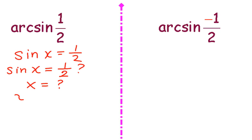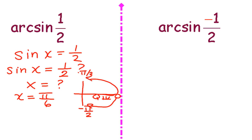So x could be π/6. Again, that's as I travel from 0 to π/2. I can't go past π/2, so now I have to travel 0 to negative π/2 and ask myself the question, is there an option for sine to be positive 1/2 down here in this fourth quadrant? And the answer is no, so the only value I have where sine is 1/2 is the angle π/6.